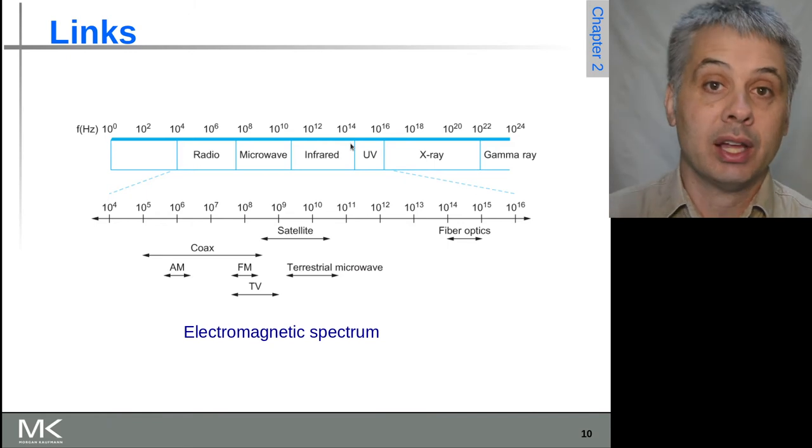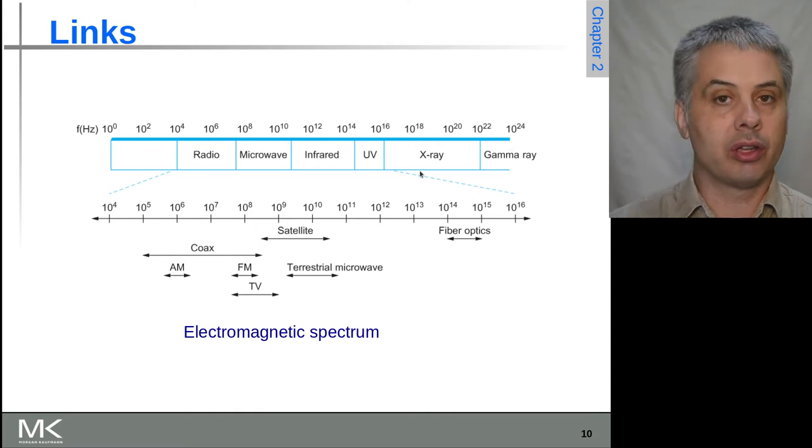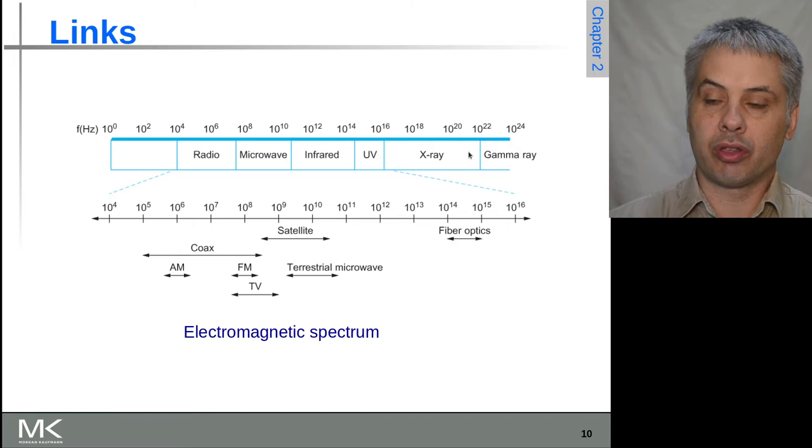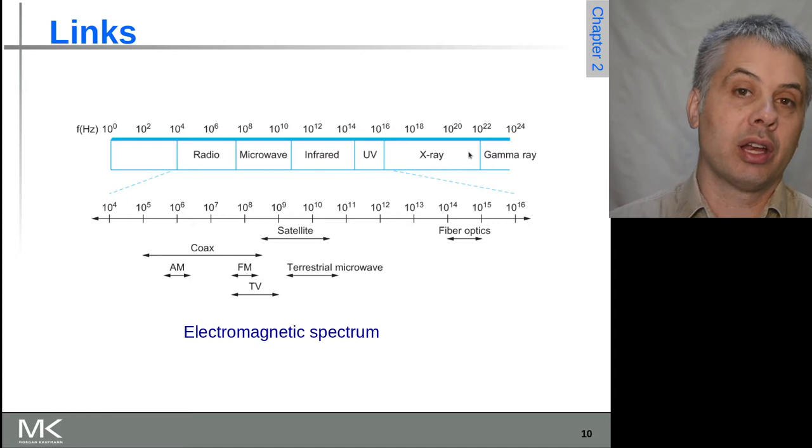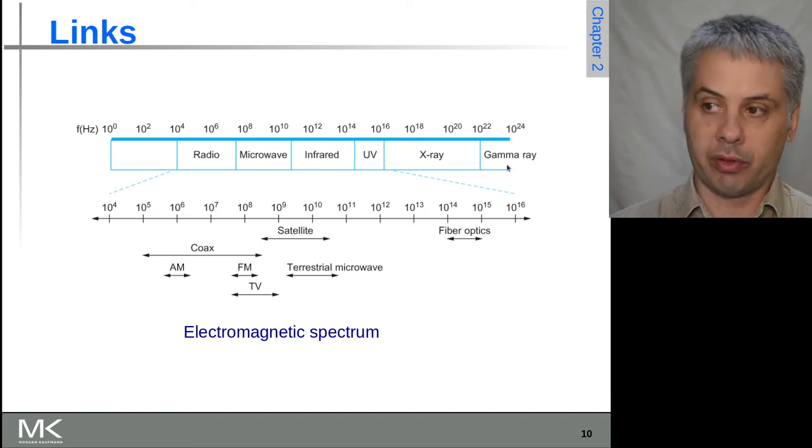Then as you go higher you get into x-rays and gamma rays. So x-rays we know are used medically and gamma rays tend to be produced by nuclear reactions including suns and other stars and other astronomical phenomena. And they're quite nasty in terms of what they will do to your body as well.